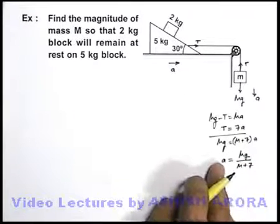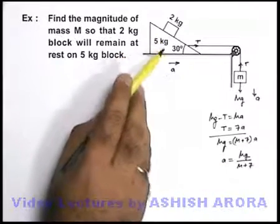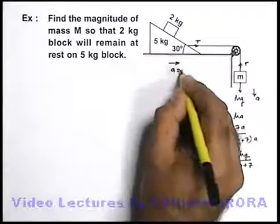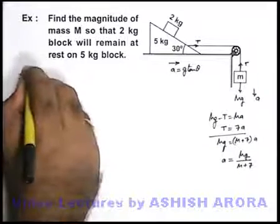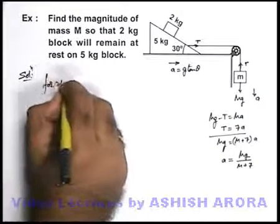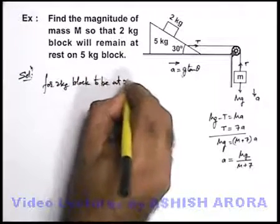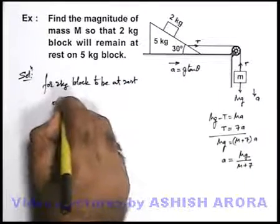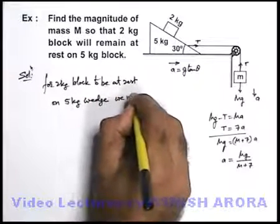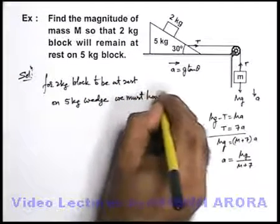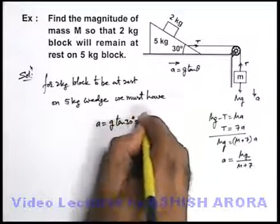And we know very well from the previous example that a block will remain at rest over a triangular wedge or an inclined plane only if it is accelerating with acceleration g tan theta. So we can say here for 2 kg block to be at rest on 5 kg wedge, we must have acceleration is equal to g tan 30 degrees, that will be g by root 3.